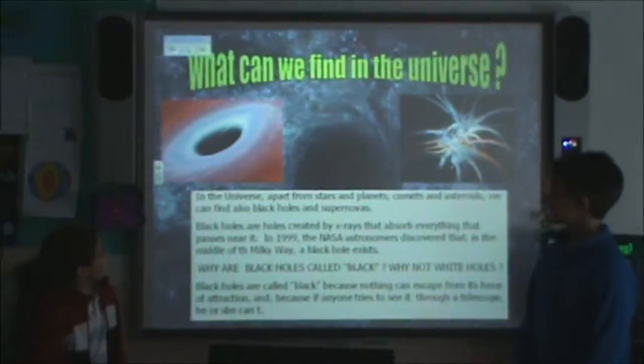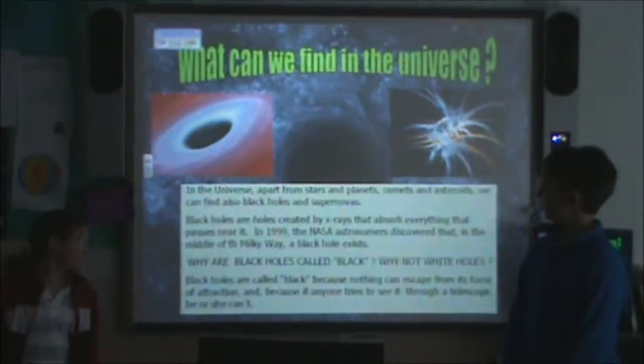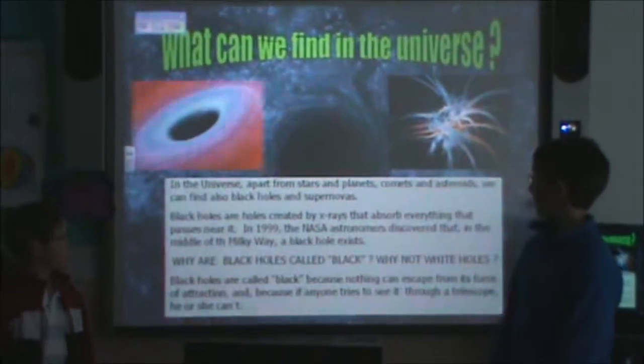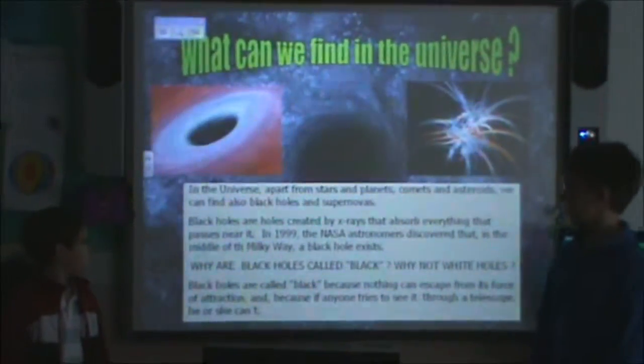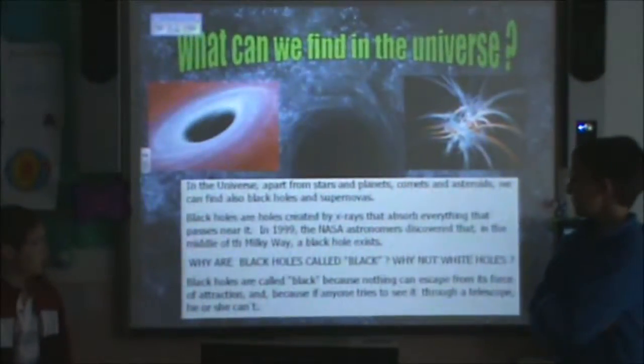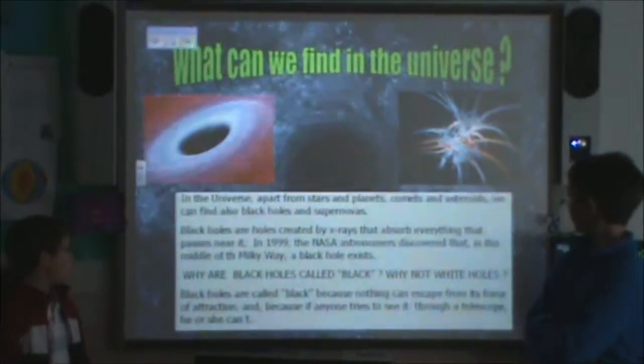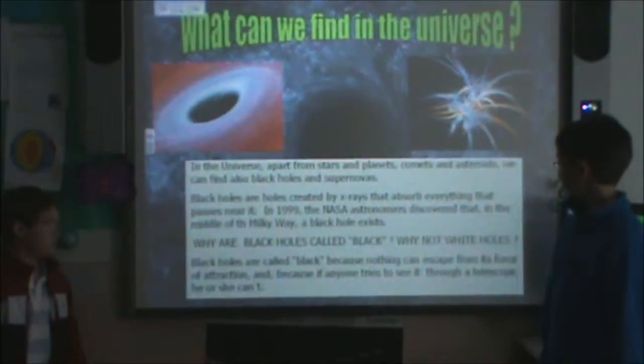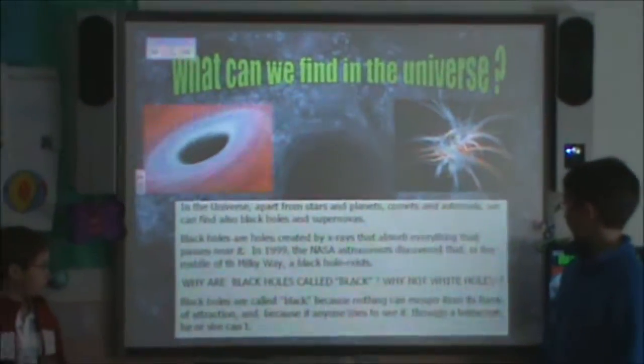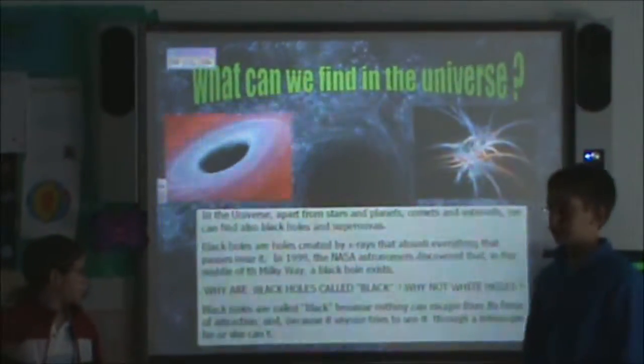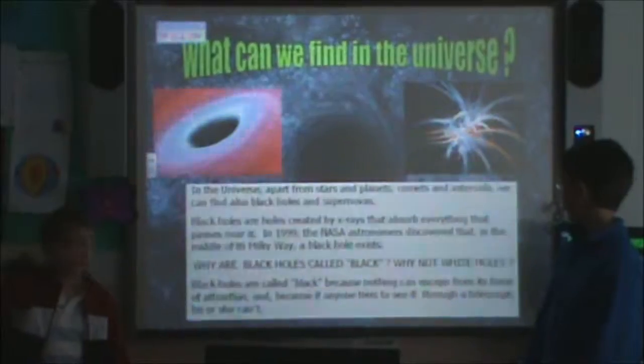What can we find in the Universe? In the Universe, apart from stars and planets, we can also find black holes and supernovas. Black holes are created by X-rays that absorb everything that passes near them. In 1999, NASA astronomers discovered that in the middle of the Milky Way, a black hole exists.